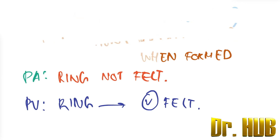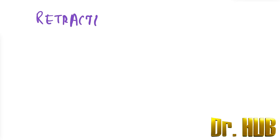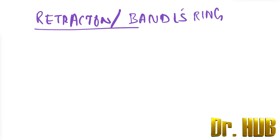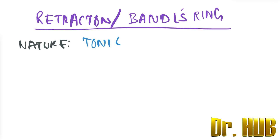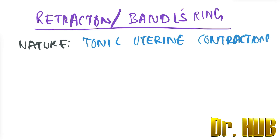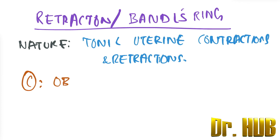Now let's look at the retraction ring, also known as Bandl's ring. The nature of Bandl's ring is that it is due to tonic uterine contractions and retractions. The cause of Bandl's ring is obstructed labor.